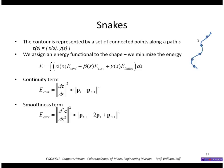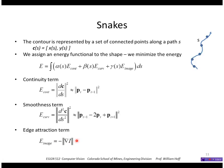The second term is the smoothness term, which tries to minimize the second derivative along the curve. It tries to keep adjacent triplets of points in a straight line — if they're not in a straight line, this quantity becomes non-zero and adds to the energy. Finally, the edge extraction term is the gradient of the image values. If a point is on top of a location with a high image gradient, this contributes a large negative value, which tends to minimize the energy.